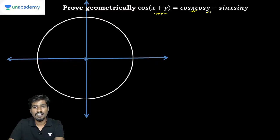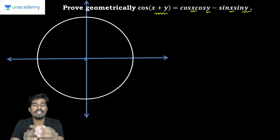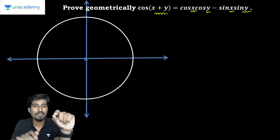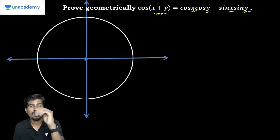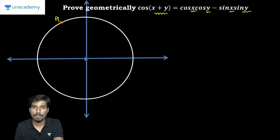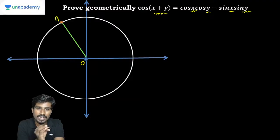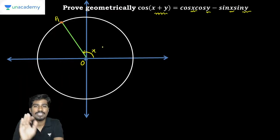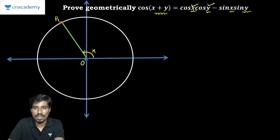We consider the diagram with angles x, y, and x plus y. We consider the angle x plus y, angle x, and angle y. Consider the elements of these square points. The first point, by the center of the circle, is P1. Consider the angle x radian.